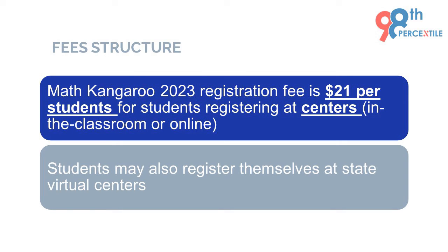Let us now discuss the fee structure. For regular registration, Math Kangaroo 2023 is $21 per student. There might be a slight change for those registering after 15th December during the late registration period.